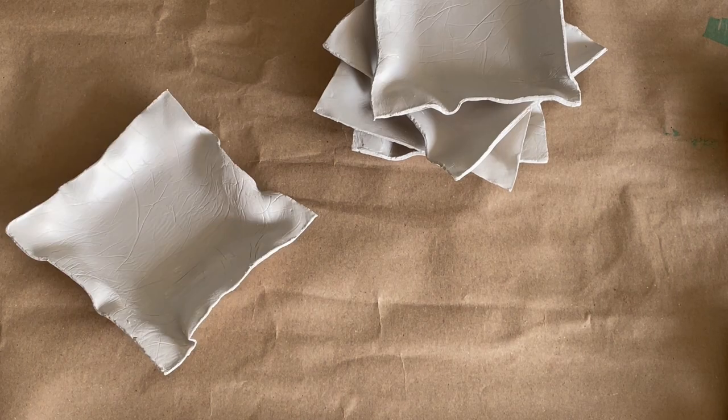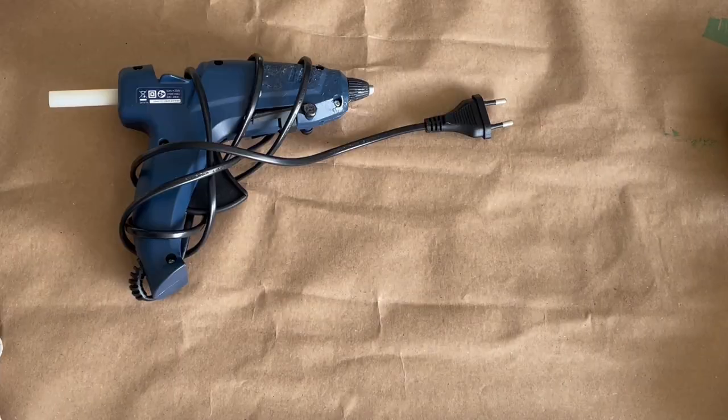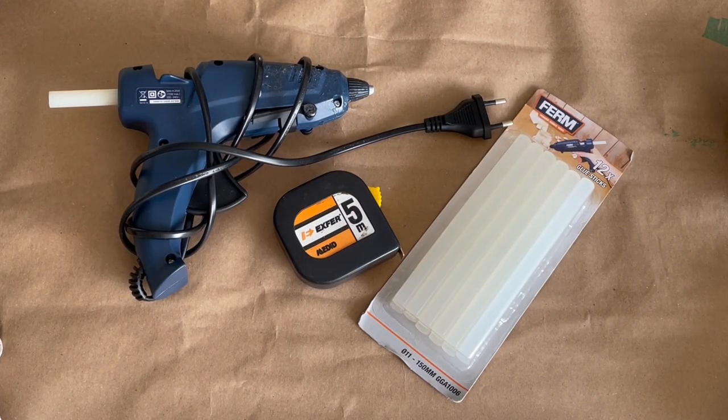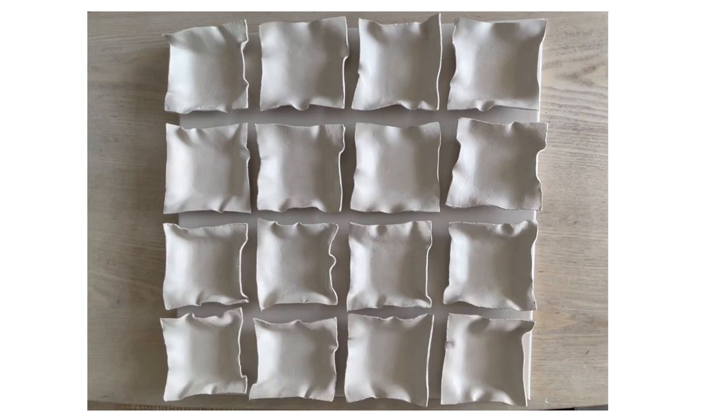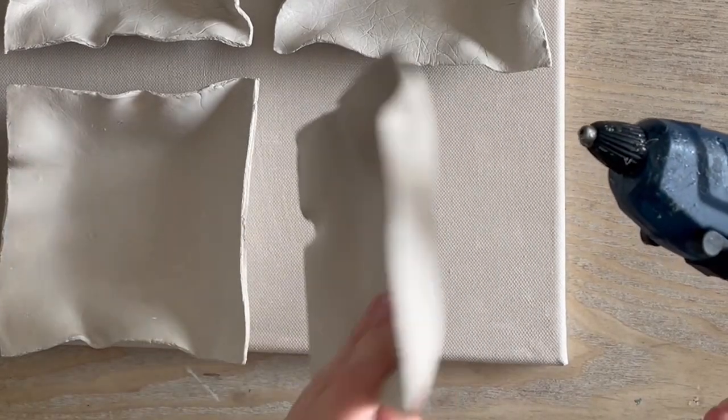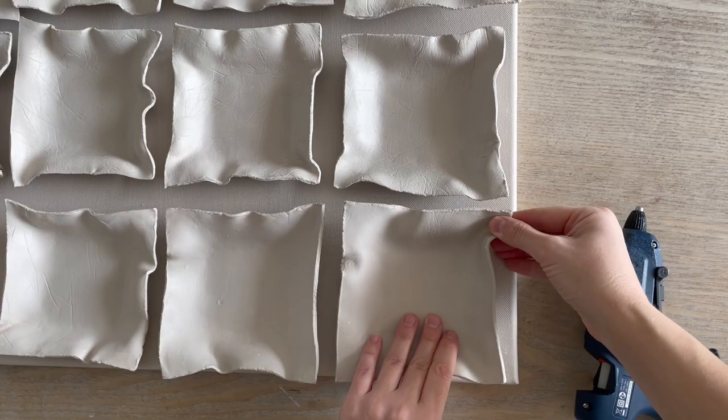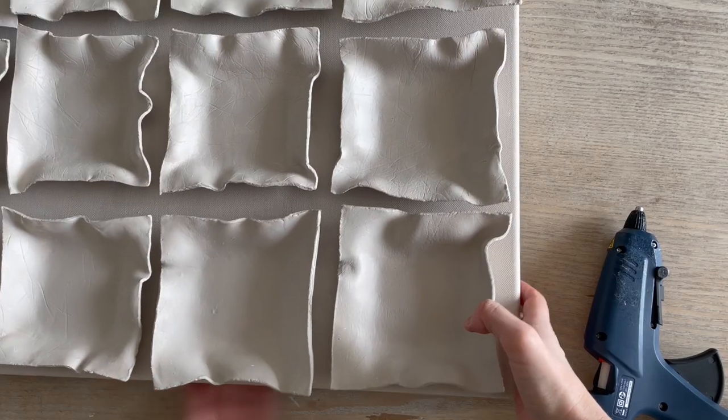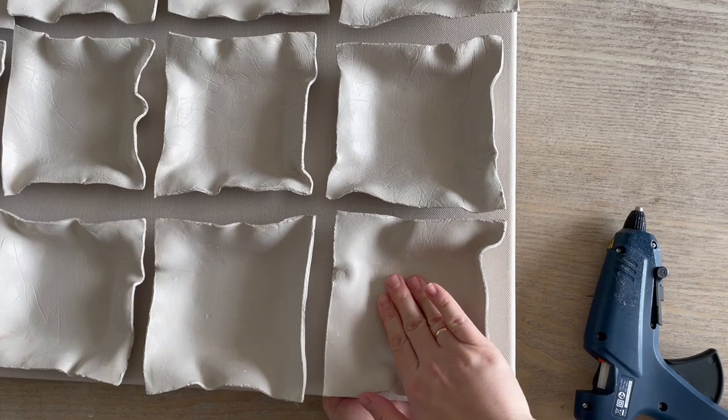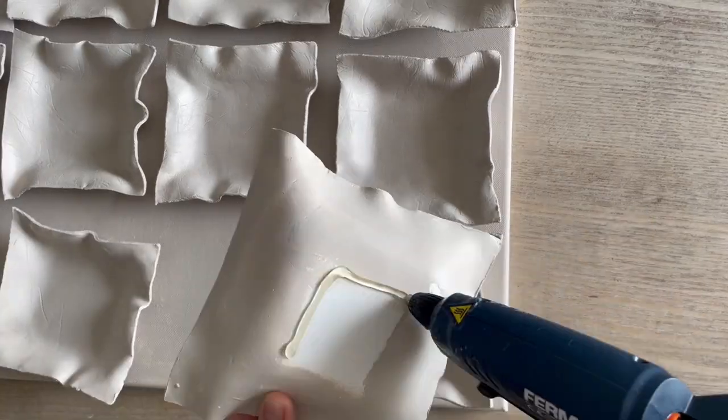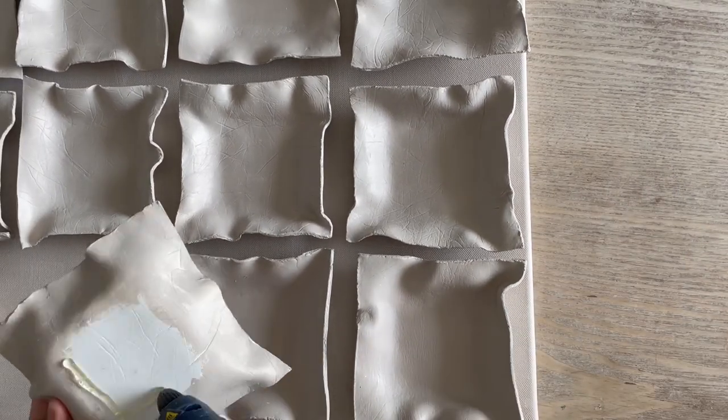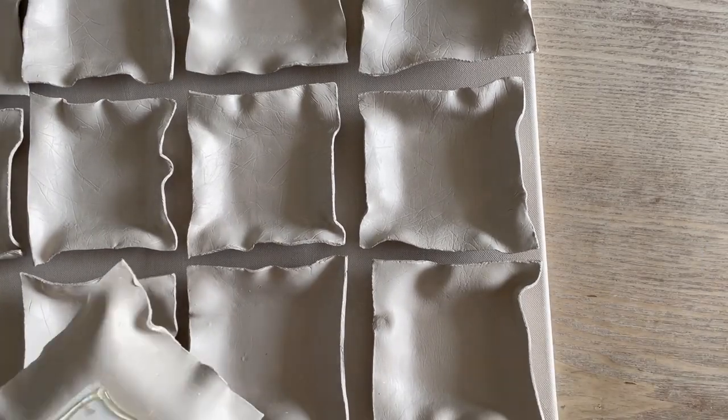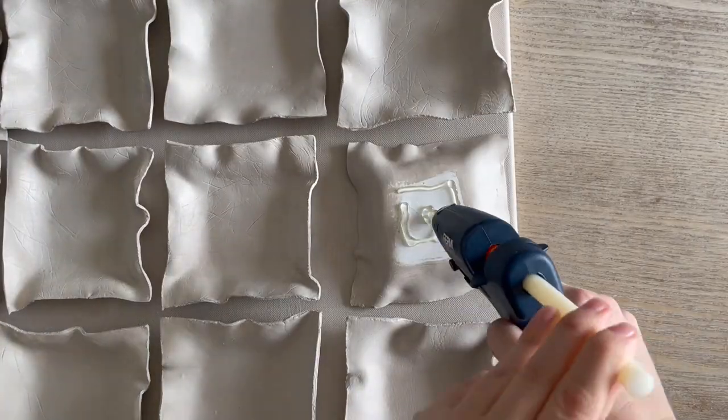When all the pieces and the canvas have dried, we can proceed to the last part of this project. This involves attaching the pieces to the canvas using a silicone gun. Be careful to measure beforehand so each piece is parallel to the other. This will make sure that the pieces are perfectly aligned to the grid when you glue them. After gluing all our pieces together, we can let our work of art dry horizontally to prevent any movement of the pieces.